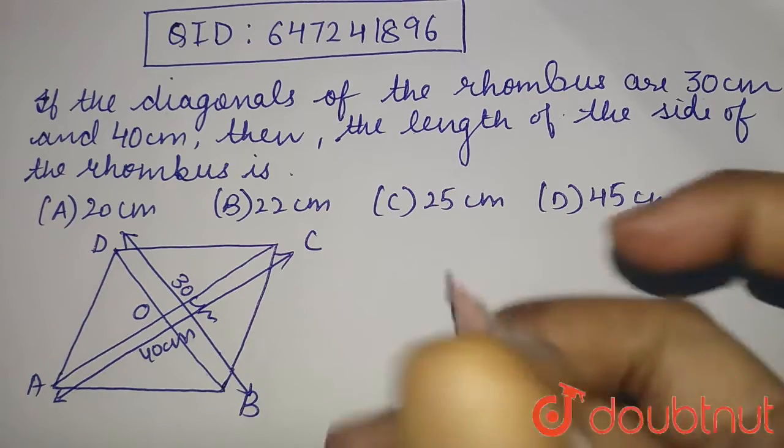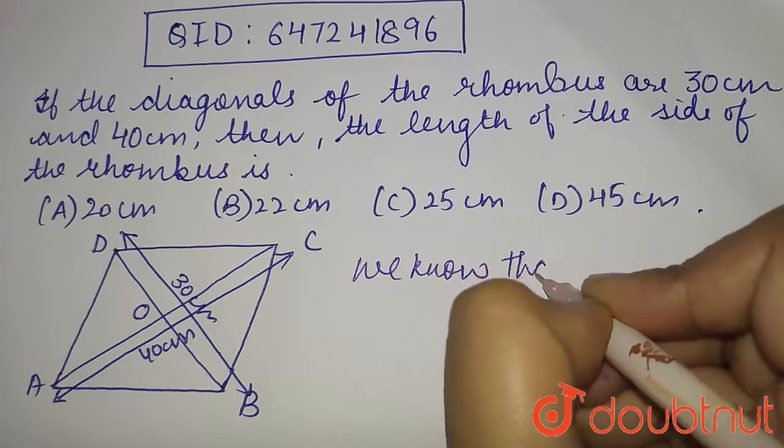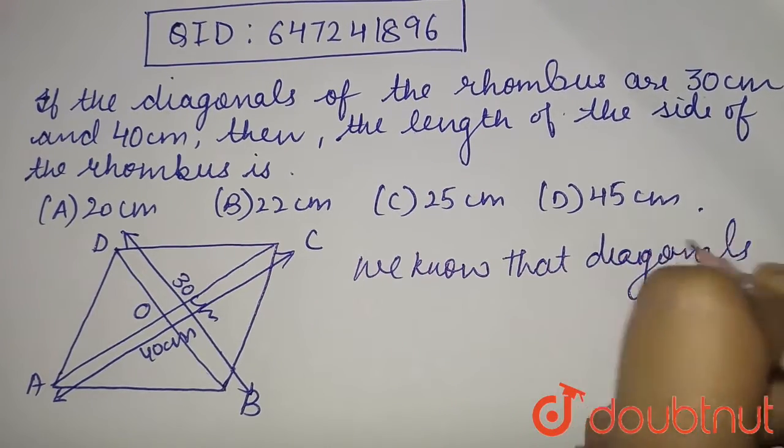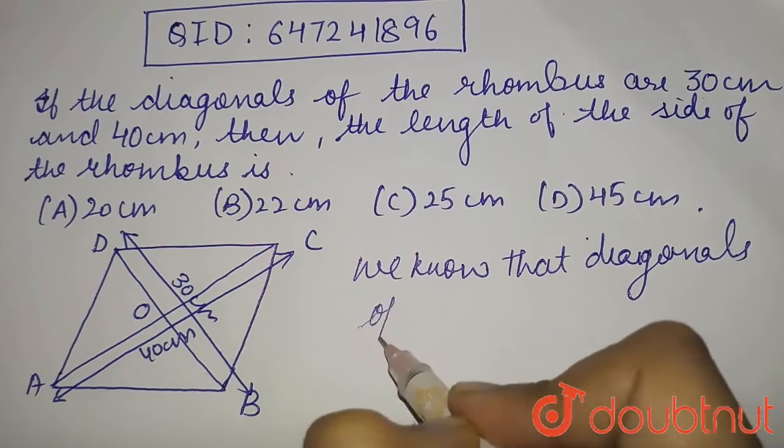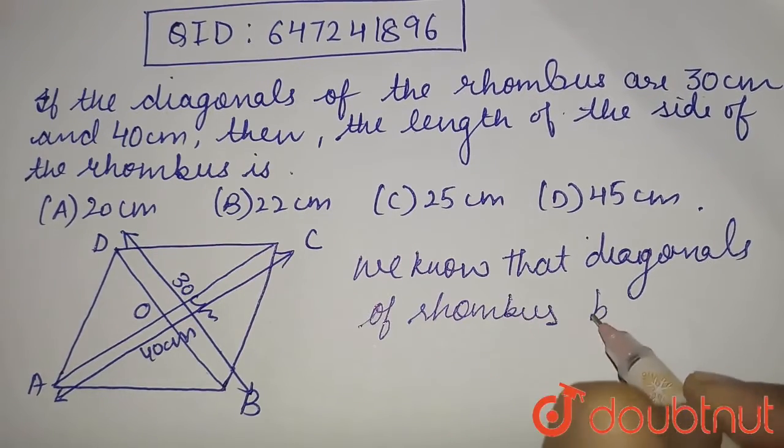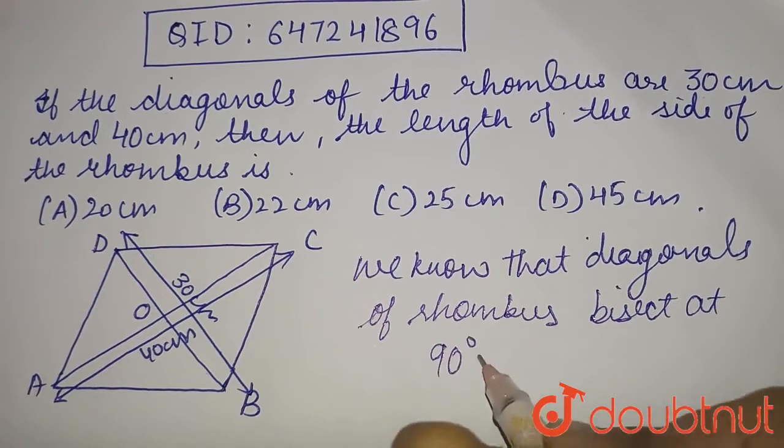So now, we know this one thing that diagonals of rhombus bisect at 90 degrees. Or you can say a right angle.